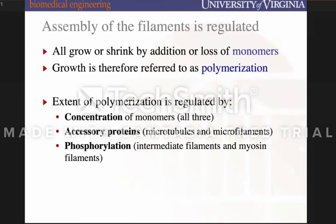The next regulator is accessory proteins. We'll be discussing those specifically for microtubules and microfilaments — they help regulate polymerization almost like a gas or a brake. And phosphorylation is another means by which cytoskeletal polymerization can be regulated, though that will be more relevant for future lectures.